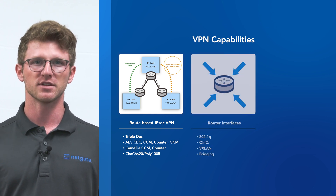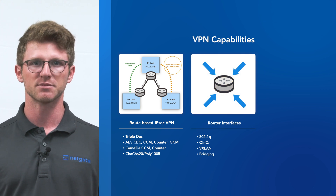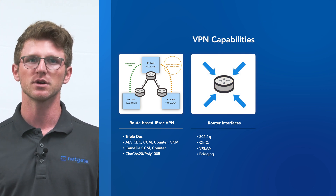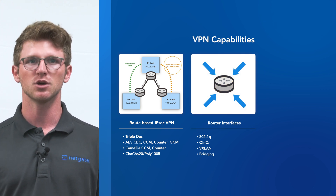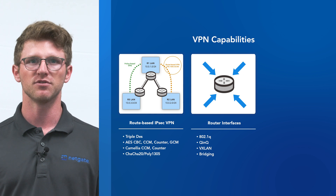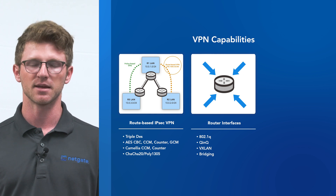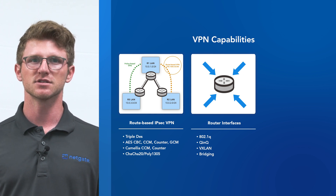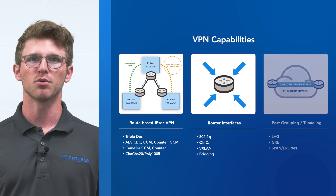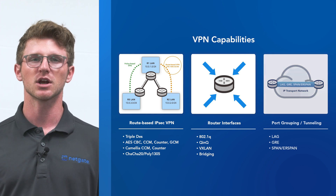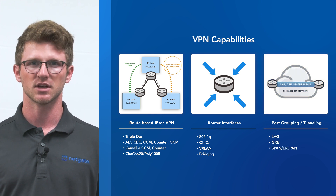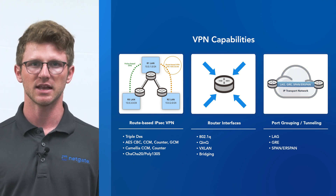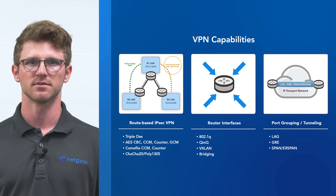For interfaces, Tensor supports VLAN encapsulation, including 802.1Q, Q-in-Q, VXLAN, and bridging. Finally, Tensor supports a number of port grouping and tunneling protocols, including LAG, GRE, SPAN, and ERSPAN.